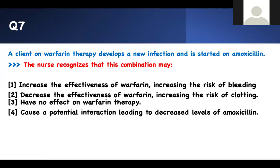A client on warfarin therapy develops a new infection and is started on amoxicillin. The nurse recognizes that this combination may: increase the effectiveness of warfarin, increasing the risk of bleeding; decrease the effectiveness of warfarin; have no effect; or cause a decreased level of amoxicillin. Antibiotics affect warfarin metabolism — they go to the liver and prevent the liver from breaking down warfarin. Therefore, the level of warfarin is very high, which increases the effectiveness of warfarin, resulting in more bleeding. Number one is your right answer.